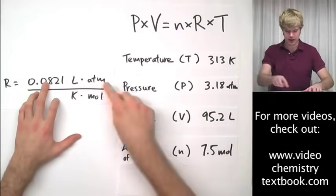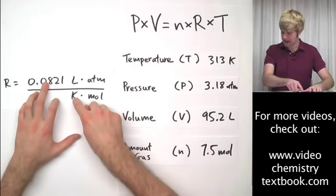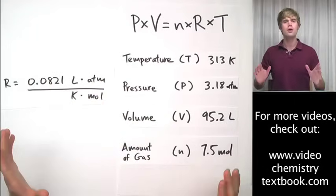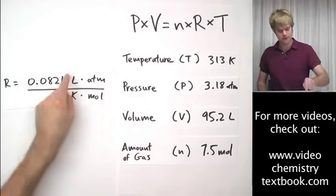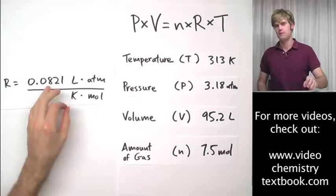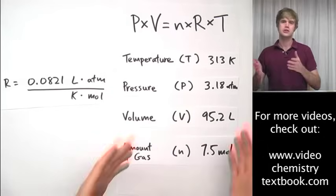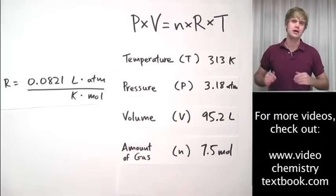So I have liters here, liters there, atm, atm, Kelvin, Kelvin, and moles, moles. You always want the units on R to match the units of the characteristics in your ideal gas problem.